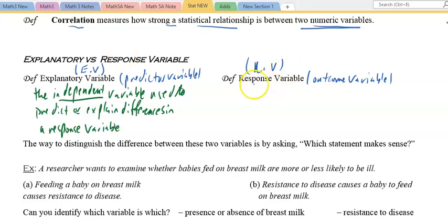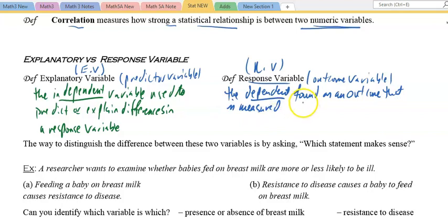Here we have the response variable, which is the dependent variable found as an outcome that is measured following a manipulation of the EV or explanatory variable.